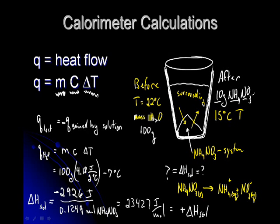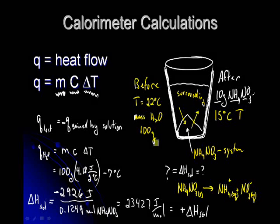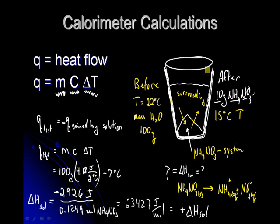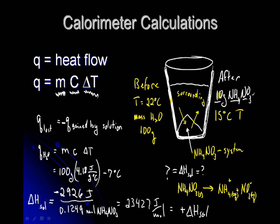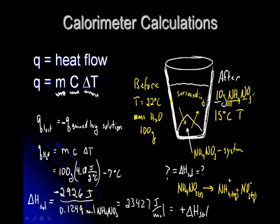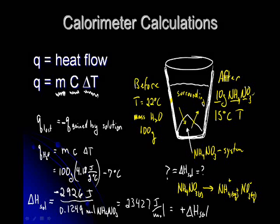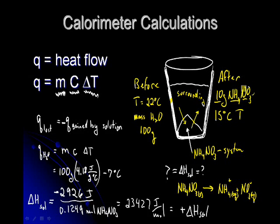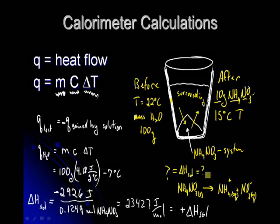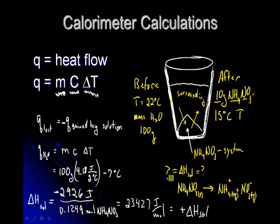So if before this was mixed, we had 100 grams of water in our calorimeter and we put in 10 grams of the ammonium nitrate, and after we put in that 10 grams of ammonium nitrate, the temperature dropped. So the question is, what is the change in enthalpy of this solution?